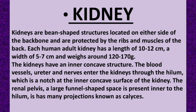First, we have the kidneys. Kidneys are bean-shaped structures located on either side of the backbone and are protected by the ribs and muscles of the back.